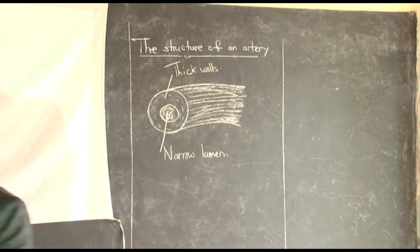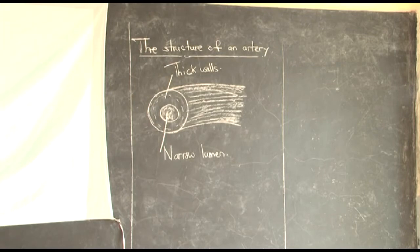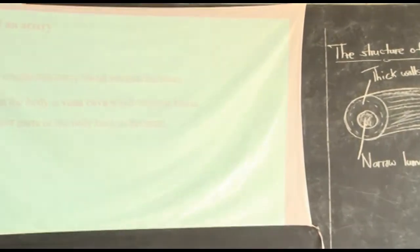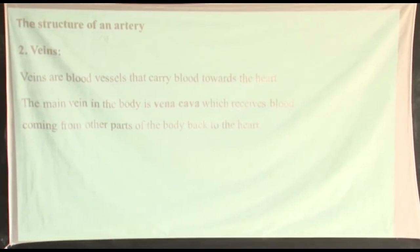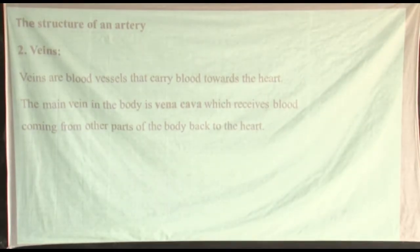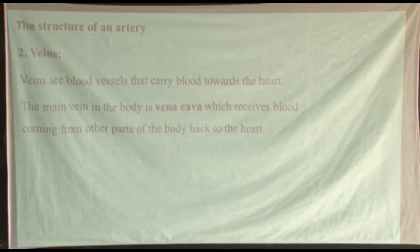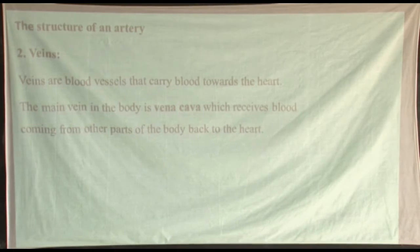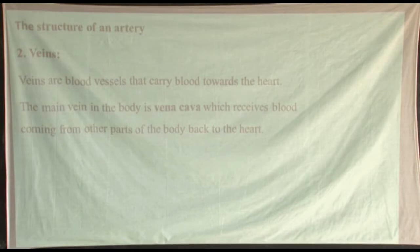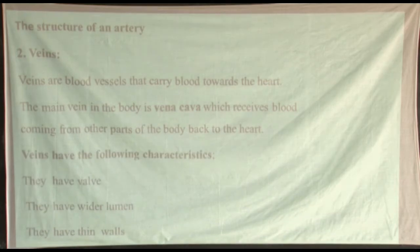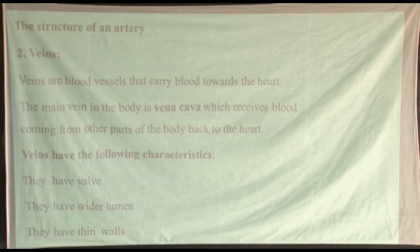Moving to veins: veins are blood vessels that carry blood towards the heart. The main vein in the body is the vena cava, which receives blood coming from other parts of the body and brings it back to the heart. Veins have a wide or wider lumen, and their walls are thin compared to arteries.